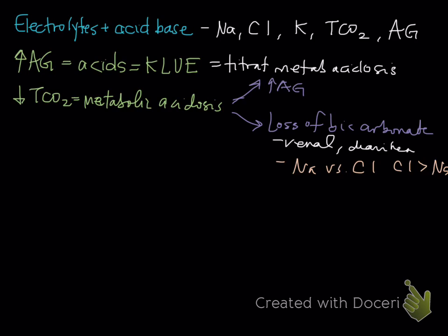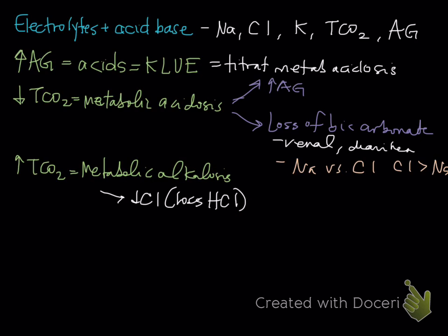You can start with anion gap or TCO2. The other option is an increased TCO2, which equals a metabolic alkalosis. With metabolic alkalosis, we expect a decrease in chloride because it's a loss or sequestration of hydrochloric acid. In this case, for sodium versus chloride, chloride will be less than sodium, either absolute or relatively.